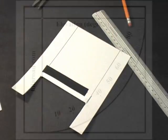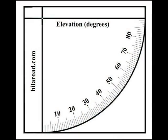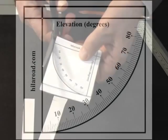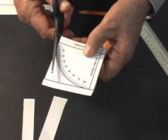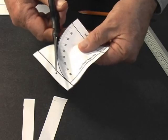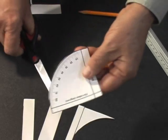Next you need an elevation scale. This scale covers the angle 0 to 90 degrees. You can download this scale at hyloroad.com slash inclinometer. Click the start construction link and you will find the PDF file about halfway down the page.